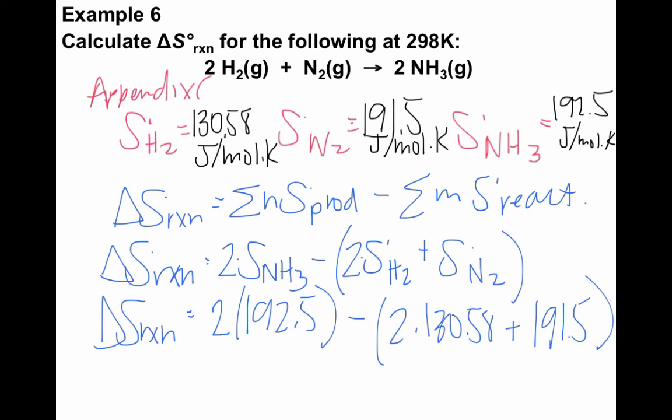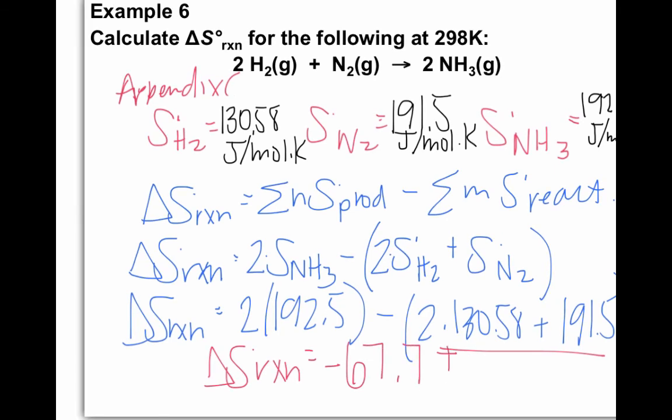So we can plug all of those values in. We get 2 times 192.5 and then 2 times 130.58 plus 191.5. So again, make sure you add up those reactants first, then subtract. And when you plug this into your calculator, you find negative 67.7 joules per kelvin.